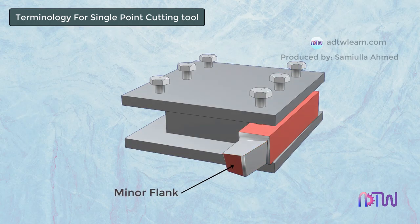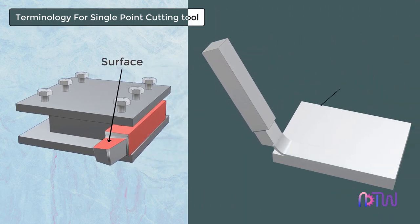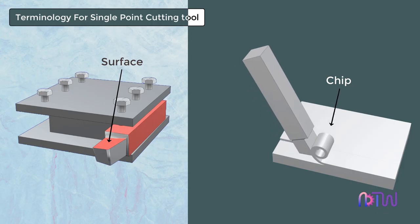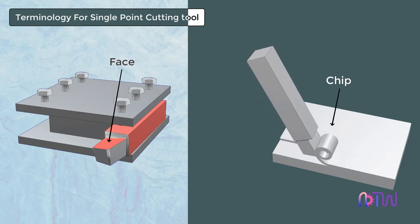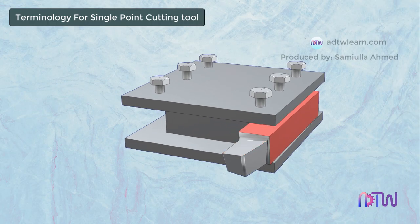This surface is called the minor flank and this surface is called the major flank. The surface over which the chip flows during the cutting process is called the face of the tool.